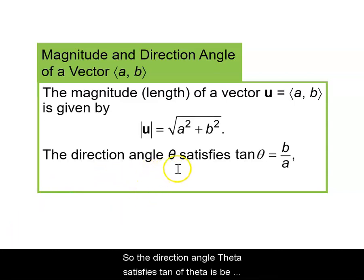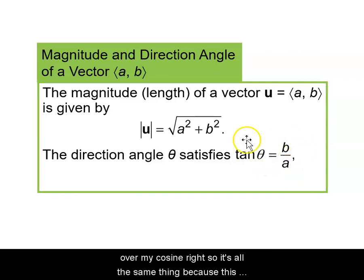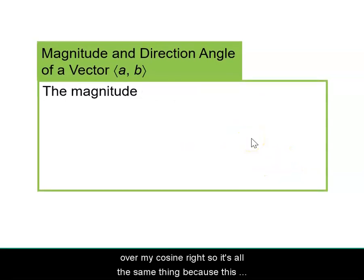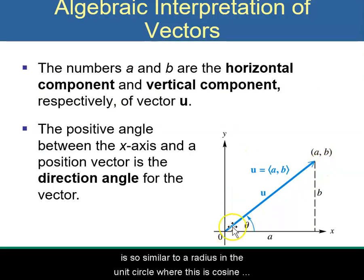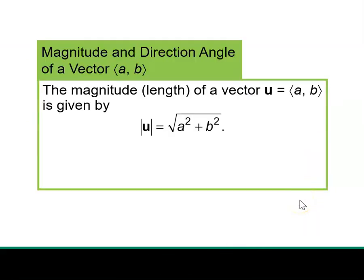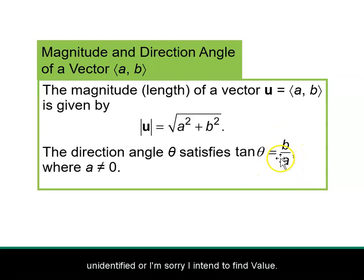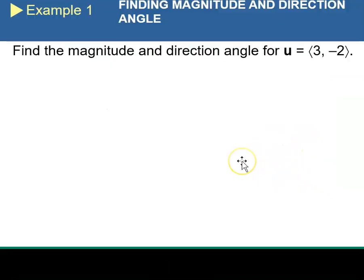The direction angle theta satisfies tan(θ) = b/a. Tangent is basically y over x, or sine over cosine. This is so similar to a radius in the unit circle where a is the cosine value and b is the sine value — we're just calling them a and b. Note that a cannot be zero, otherwise you have an undefined value. So let's look at an example.